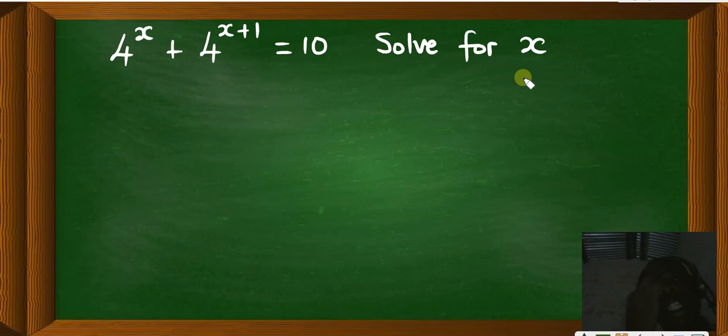So this one is simple, you solve it in this way. Let's say this one should be equal to, so you write 4 to the power x like that, plus, so this one you use a multiplication law of indices.